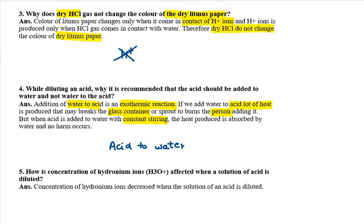How is the concentration of hydronium ions (H3O+) affected when a solution of acid is diluted? If you dilute an acid — meaning you reduce the concentration of the acid — then the hydronium ions will decrease. When you add water to an acid or try to dilute it, the hydronium ion concentration decreases. This is about question number 5.